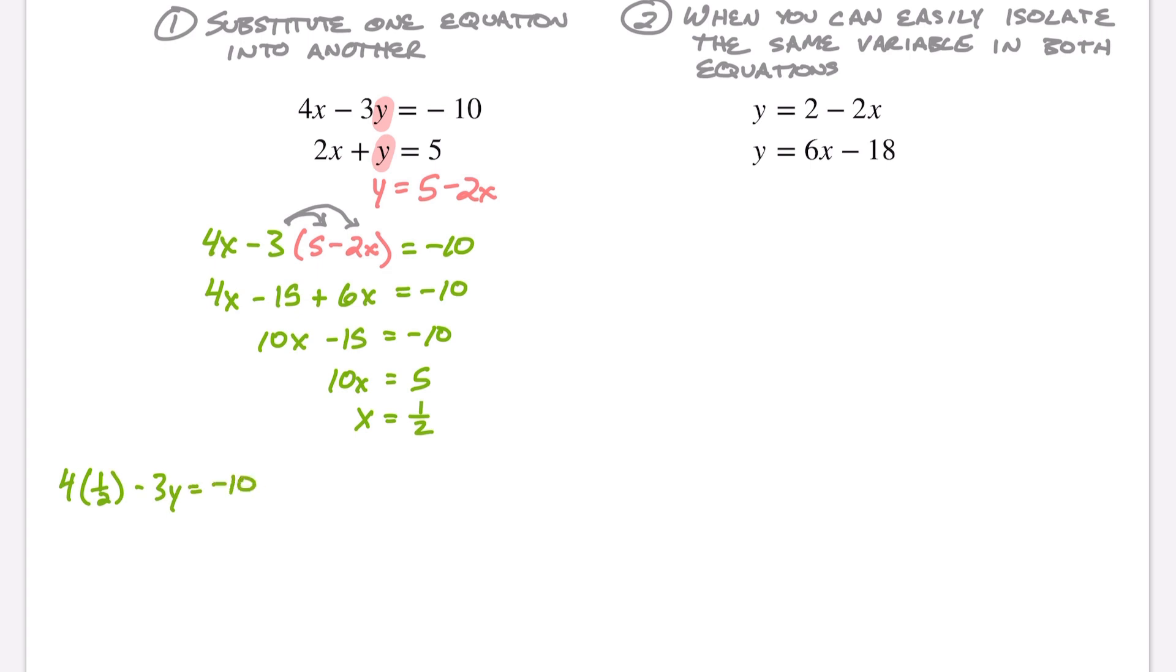So 4 times one half is 2 - 3y = -10. Subtract 2, so I get -3y = -12 and divide by negative 3, y = 4. So I see that I've got one half and 4.